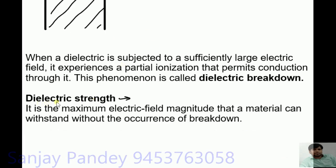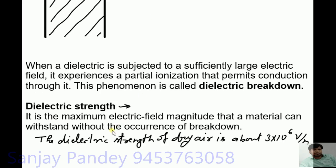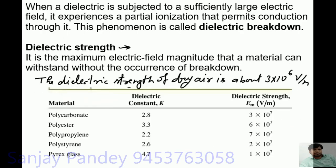Dielectric strength is the maximum electric field magnitude that a material can withstand without the occurrence of breakdown. Dielectric strength is affected significantly by temperature, trace impurities, small irregularities in the metal electrodes, and other factors that are difficult to control. For this reason, we use approximate figures for dielectric strength. The dielectric strength of dry air is about 3 × 10⁶ V/m. A table gives the dielectric constant and dielectric strength of some insulating materials.